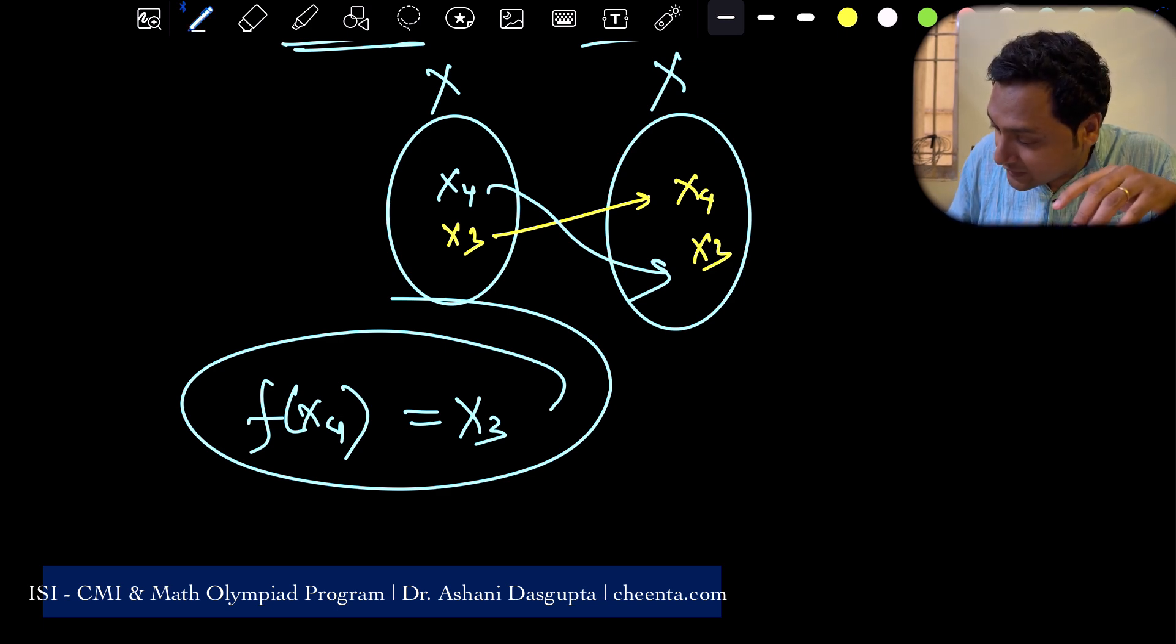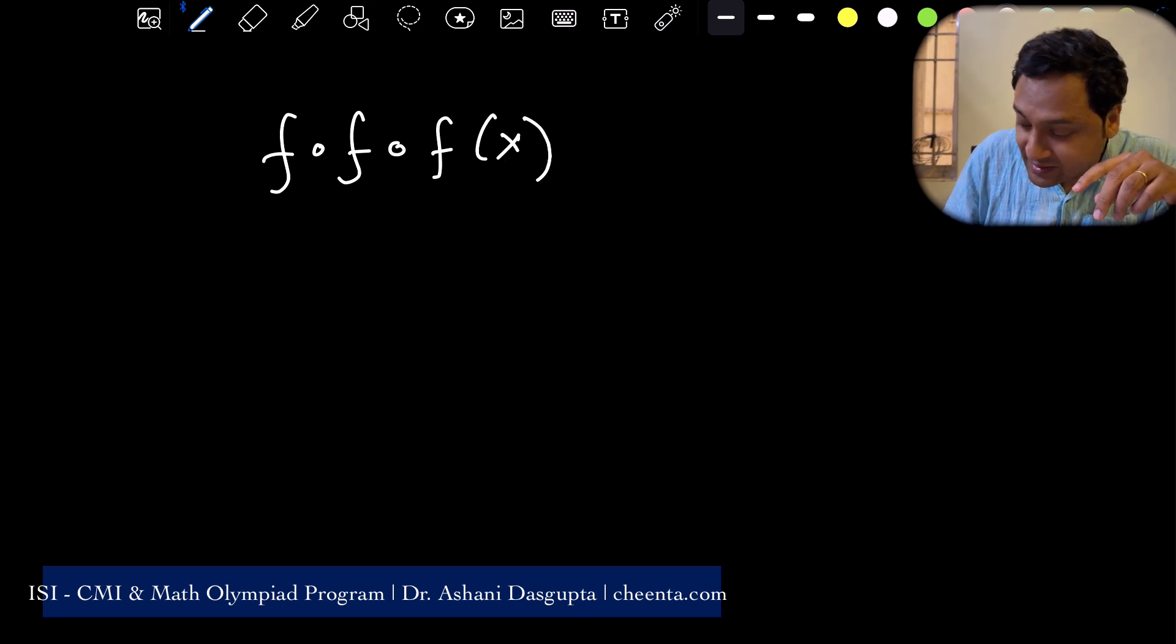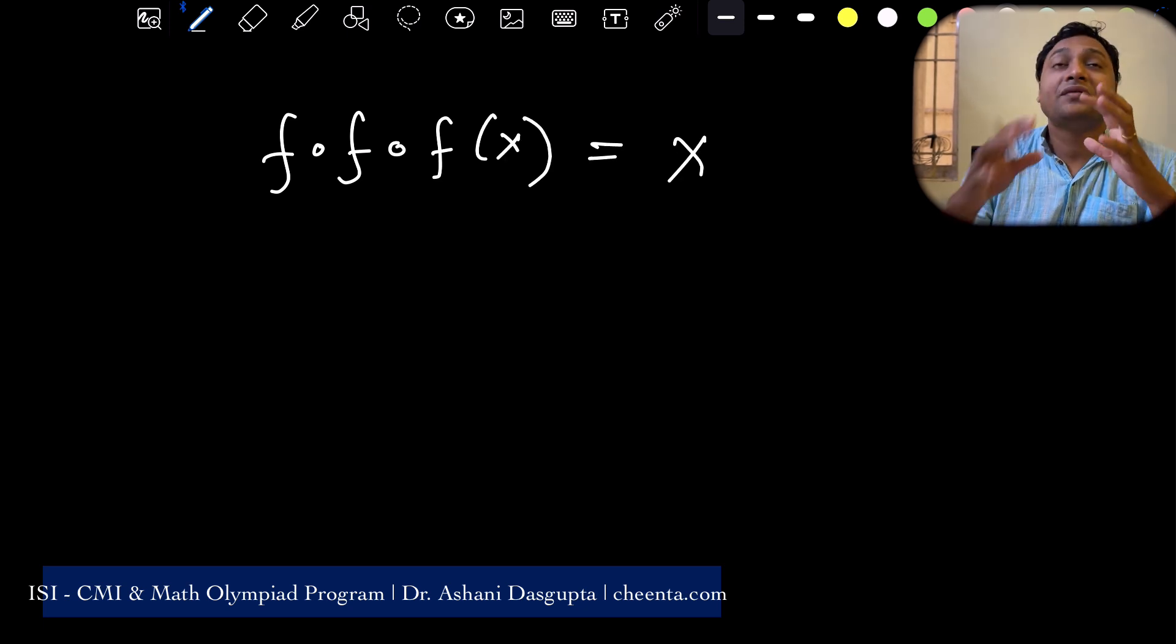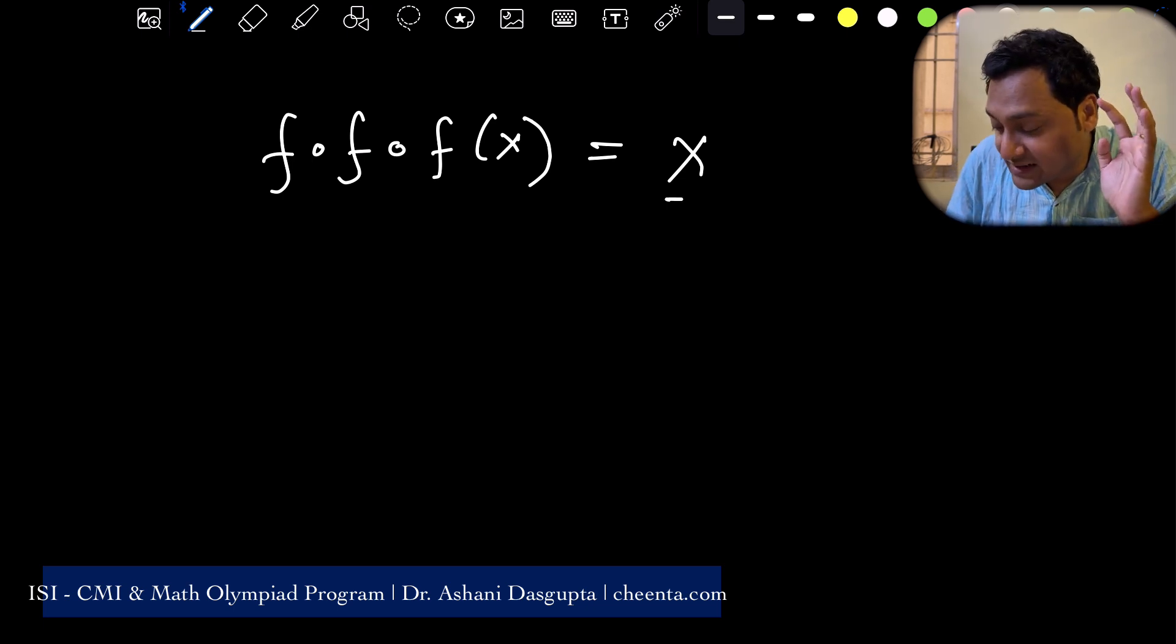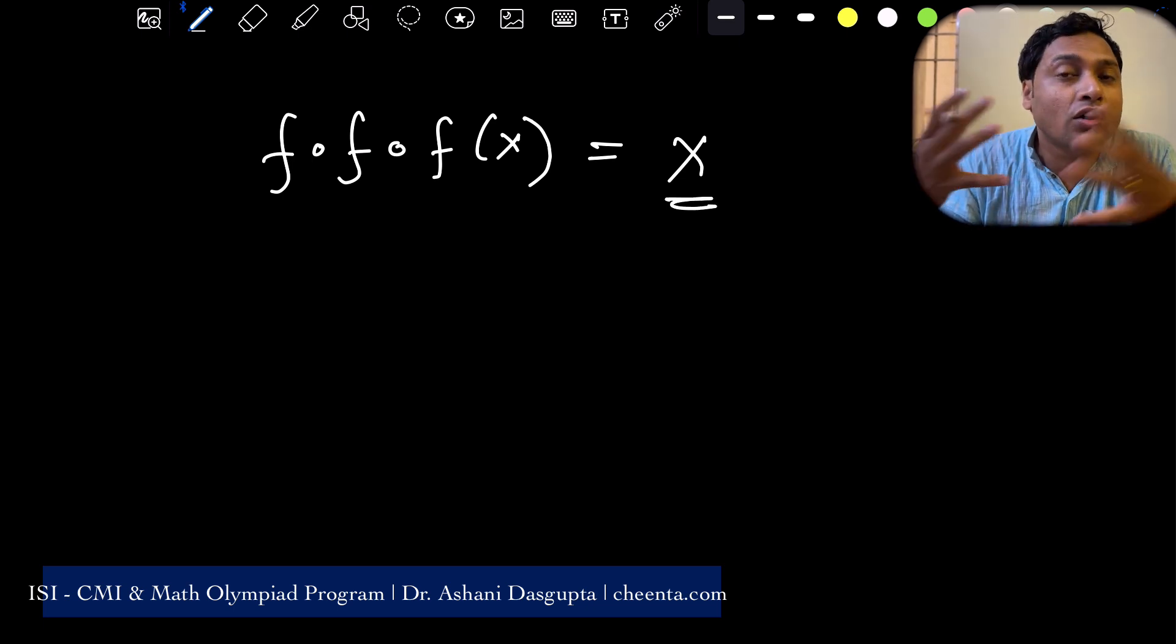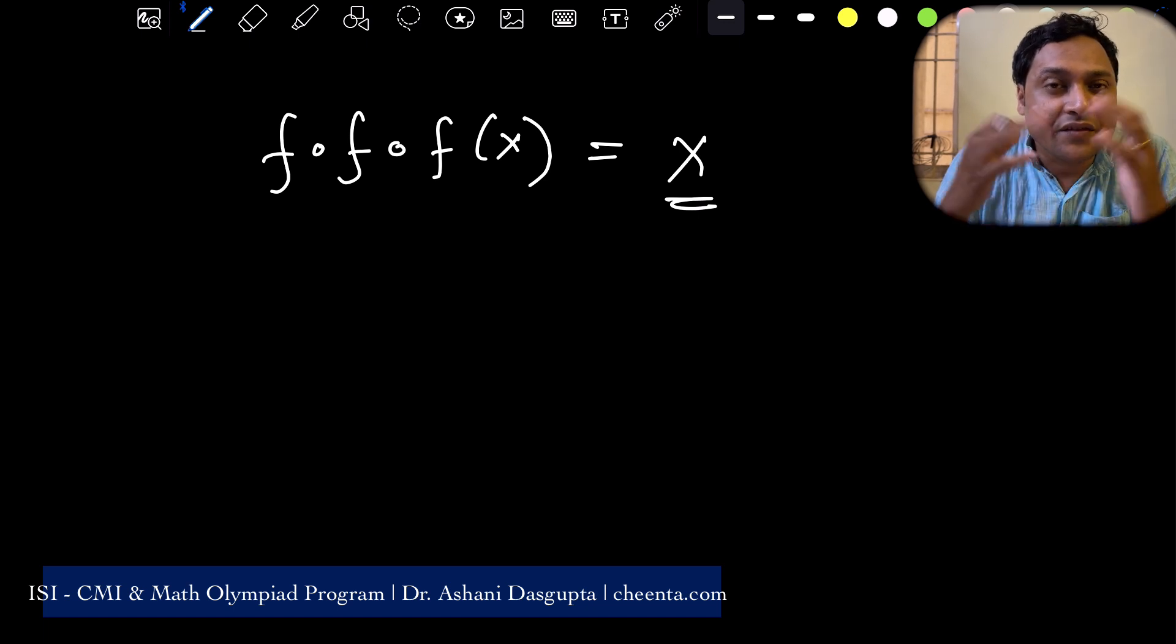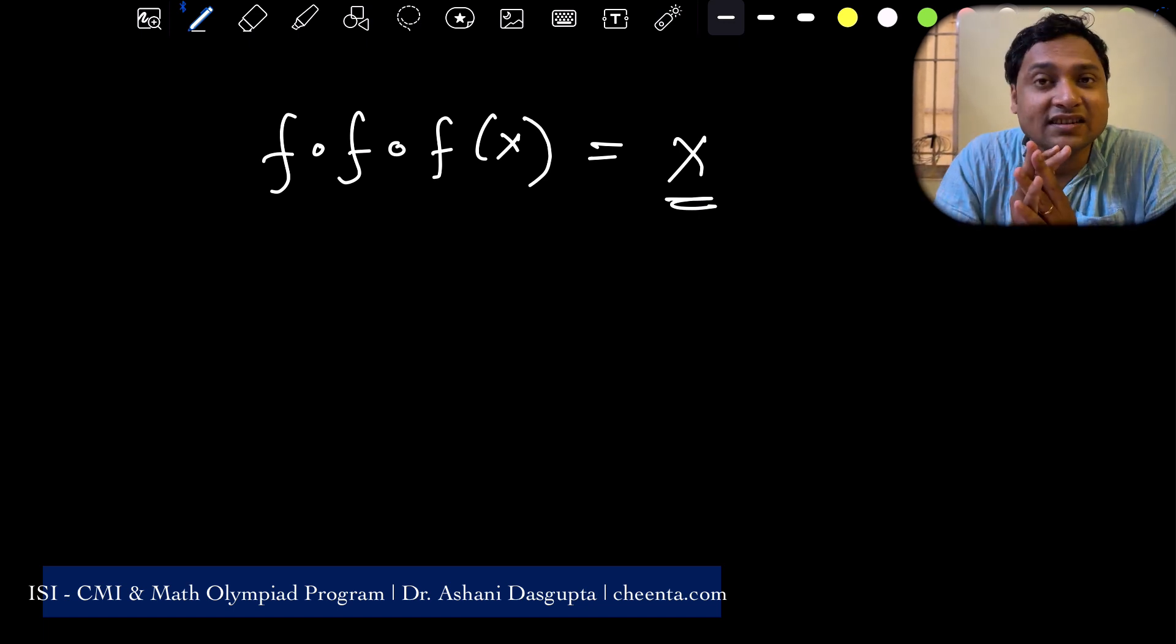I'll give you a challenge question as promised. If I do it three times, if it's given that f of f of f of x is x. That is, if I triple compose the function with itself and it's x, it's an identity. Can we say something about the one to one or the onto-ness of the function? If you can, put it in the comment section. Give me a detailed analysis of how this works.